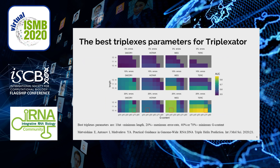The triplex parameters that lead to the best results — the largest area under the ROC curve — are a minimum triplex length of 10 nucleotides and a maximum error rate of 20%. Regarding minimum G content, triplexes can be divided into two groups: those with low G content (at least 40%) and those with high G content (at least 70%). As we see no reason to prefer one value over the other, we suggest trying both parameter variants.